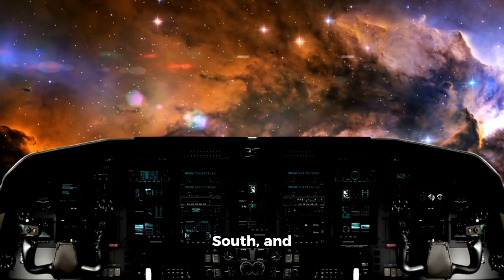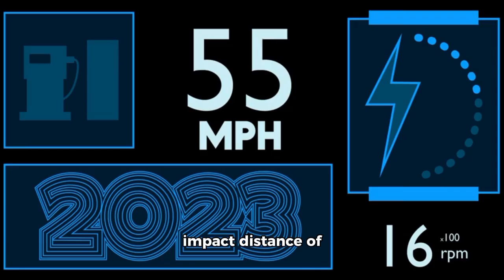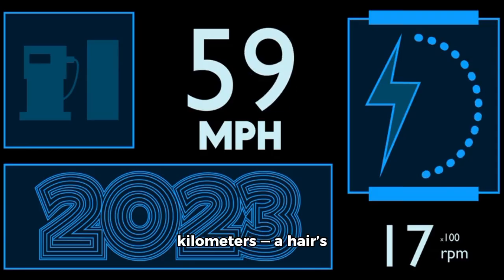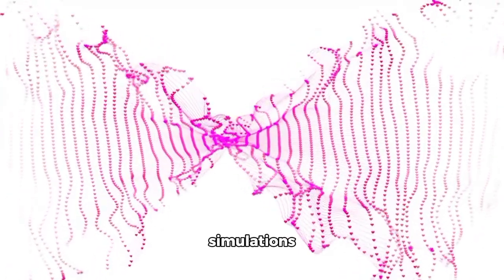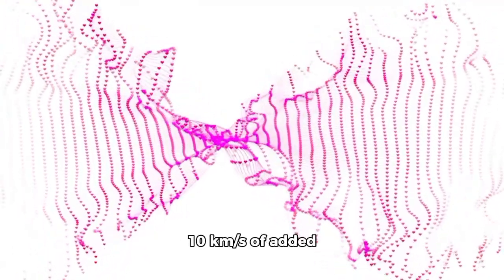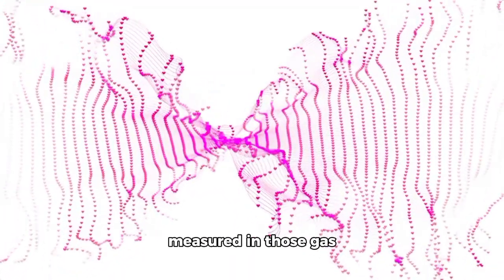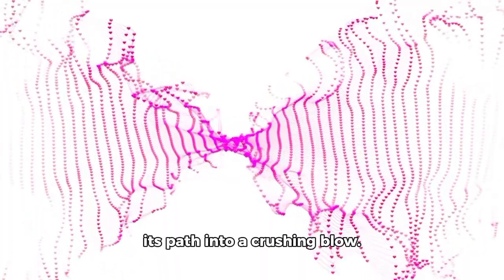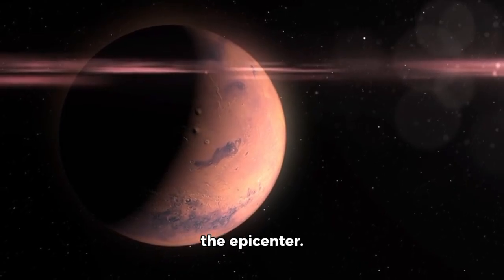As Webb, Gemini South, and NASA's Jet Propulsion Laboratory continued to monitor the object, the numbers began telling a terrifying story. What was previously a near-miss had evolved into a new impact distance of only 1.95 million kilometers, a hair's width on a cosmic scale. Even worse, simulations demonstrated that just 10 kilometers per second of added velocity may be sufficient to shift its path into a crushing blow. Think about that, just a nudge, a whisper of thrust, and Mars becomes the epicenter.